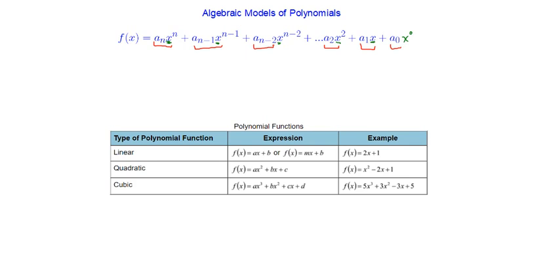So we start with n, go to n minus one, n minus two, down to two, down to one, and down to zero. We typically don't write that x to the zero because any number to the power of zero is just equal to one, so this is multiplying by one. You could think of it as being there, but we certainly don't need it.